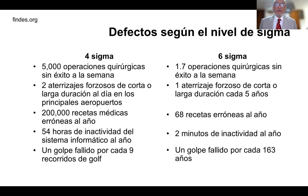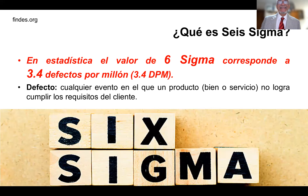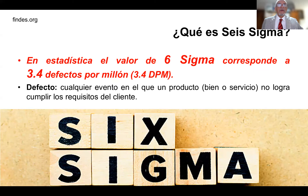Seis sigmas es uno punto siete operaciones quirúrgicas sin éxito a la semana, en comparación con cinco mil en cuatro sigmas. Solo un aterrizaje forzoso cada cinco años, solo sesenta y ocho recetas erróneas al año, dos minutos de inactividad al año en un sistema informático, y un golpe fallido cada ciento sesenta y tres años. En estadística, el valor de seis sigmas corresponde a 3.4 defectos por millón. Le llamamos defecto a cualquier evento en el que un producto, sea bien o servicio, no logra cumplir con los requisitos del cliente.